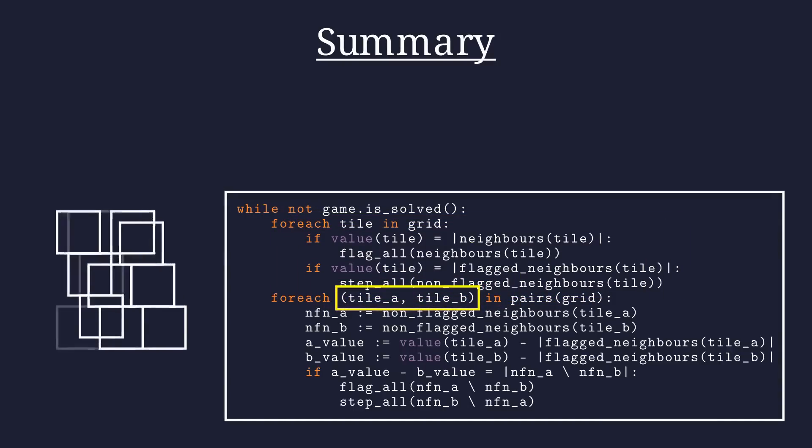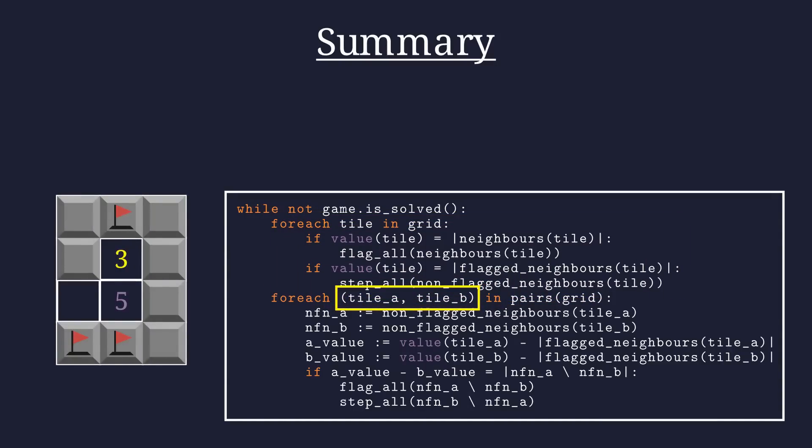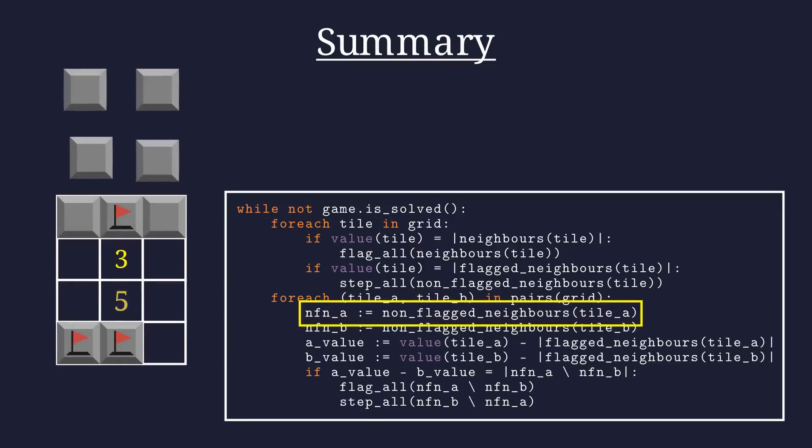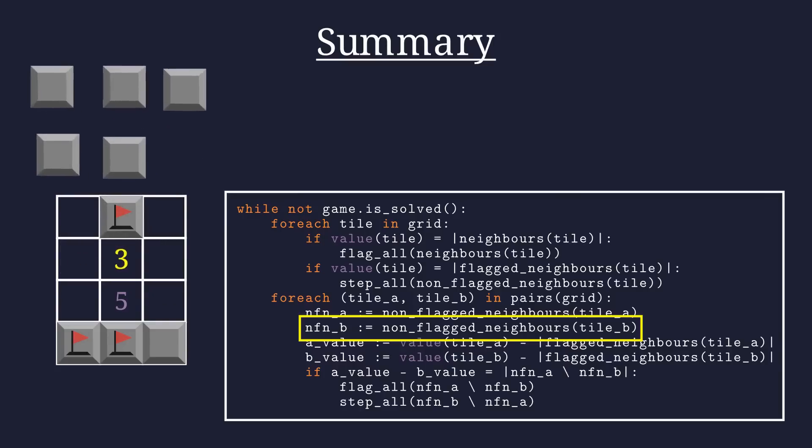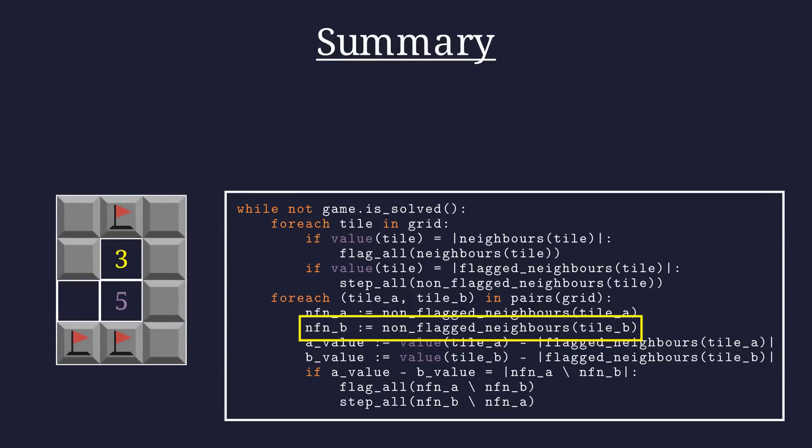We then move on to our second approach, which would probably work best when the first yields us no results. Consider two nearby tiles this time. We ignore all flagged neighbors, both in our neighbor sets and the set values, here done by naming those non-flagged neighbor sets NFN A and NFN B respectively, and the modified values A value and B value. Take the difference of these modified values. If this difference equals the size of the set of tiles near the first but not near the second, those tiles are mines, and the other tiles near the second and not near the first are all safe.